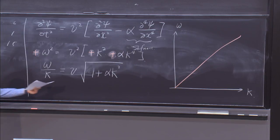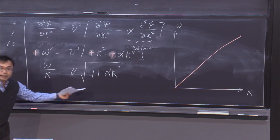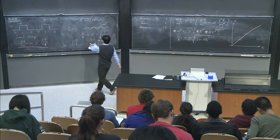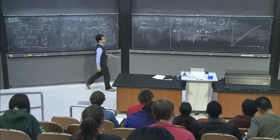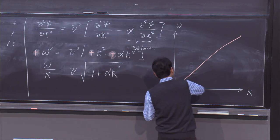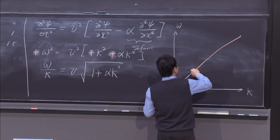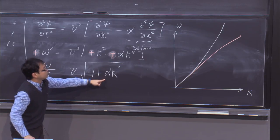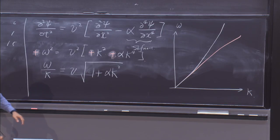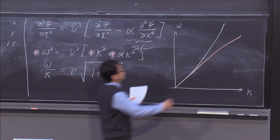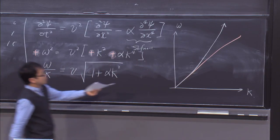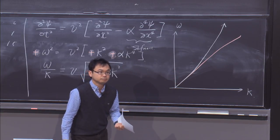So ω/k = v√(1 + αk²), which means the ratio is no longer constant — it depends on k. Waves with different wave numbers propagate at different speeds. Before introducing this stiffness term, ω/k was a constant v independent of k. Now once we include the model, the speed of the progressing wave depends on how distorted the wave is — i.e., on its wavelength.